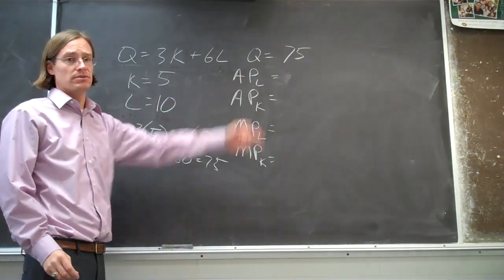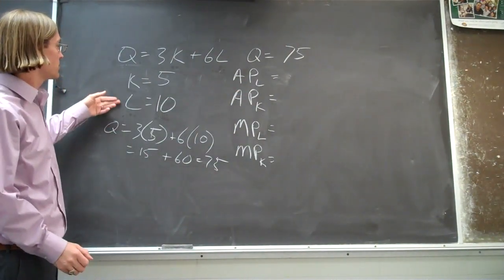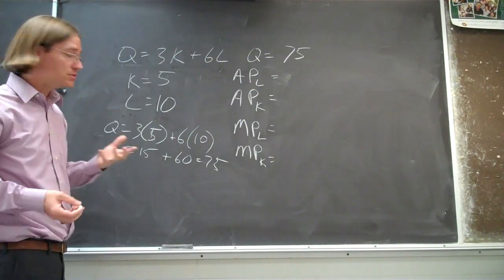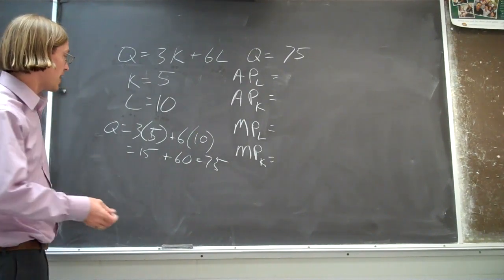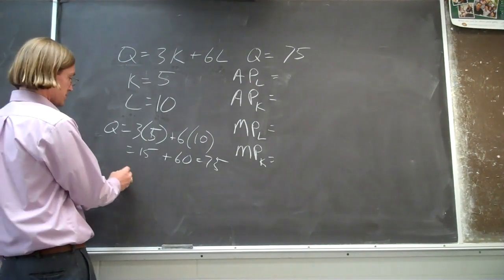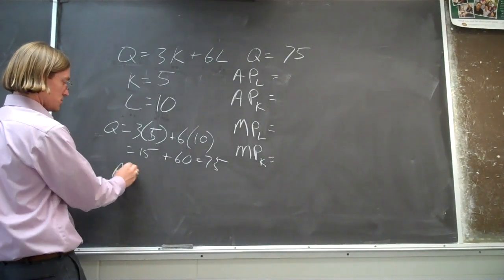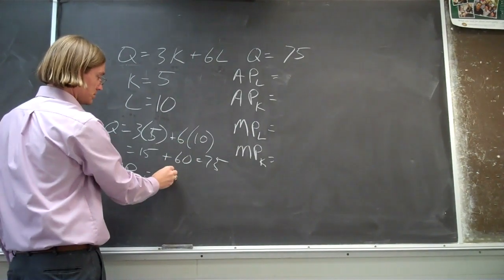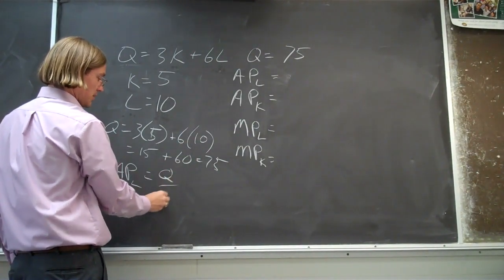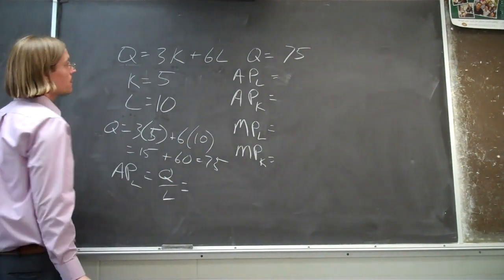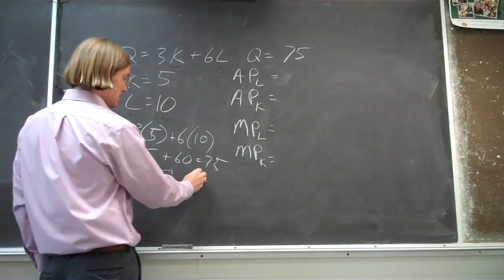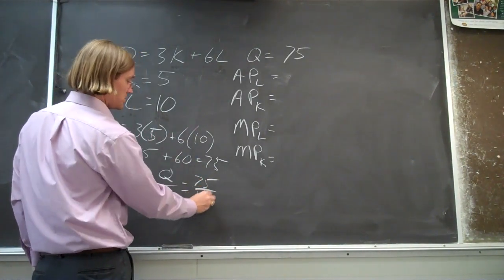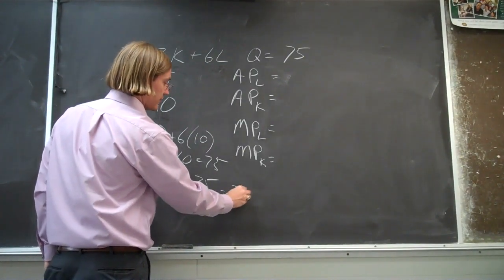Now, what's the average product of labor? For each unit of labor that we're using, how much output is being produced on average? To get the average product of labor, we can just divide our output Q by the amount of labor we're using. So it should be seventy-five divided by ten, which gives us seven point five.